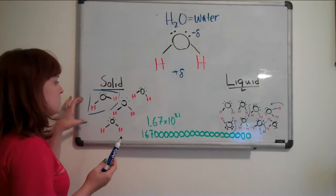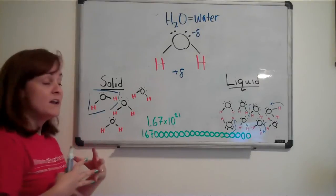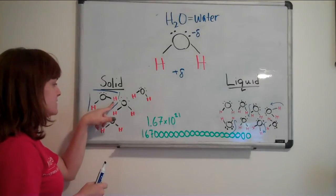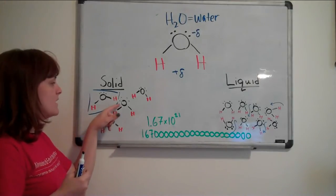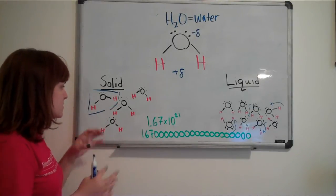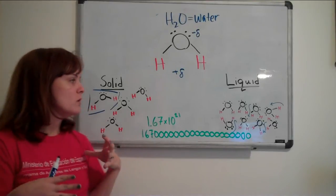But in ice, when an ice cube freezes, the water molecules line up so that the positive ends, the hydrogens, are kind of interacting with the negative ends of another water molecule. So that makes these water molecules spread out more than they do when they're in their liquid form.